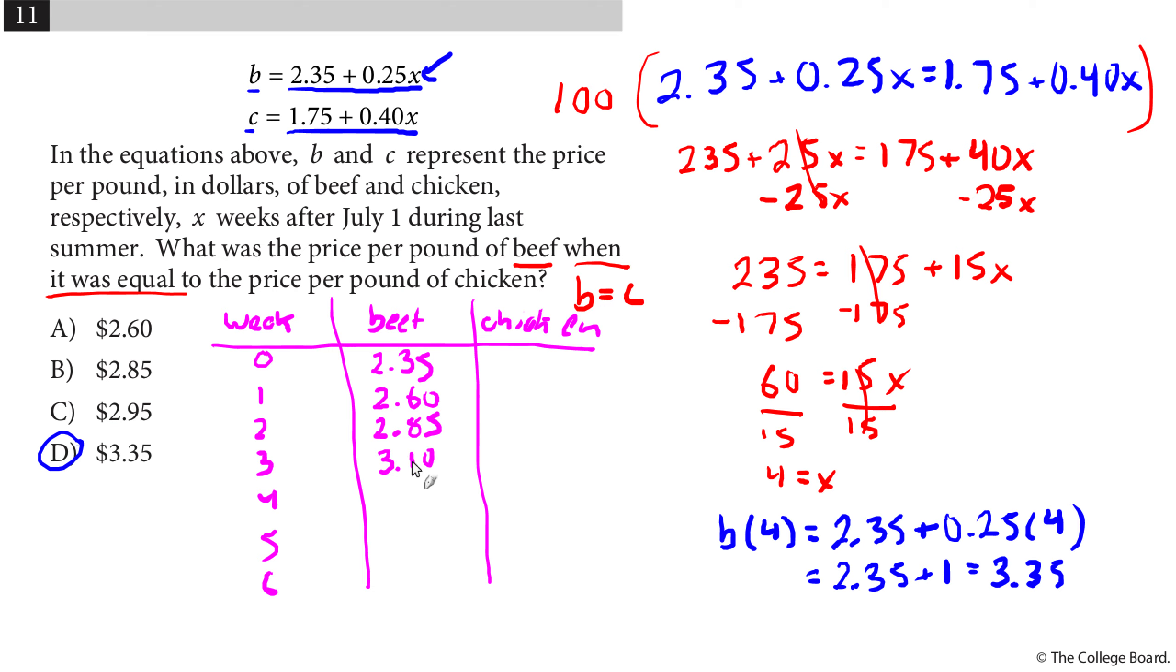So three weeks, that would be 3.10. After four weeks, that'd be 3.35. After five weeks, that would be 3.60. And after six weeks, that'd be 3.85 and so forth. And then I can look and see what happens to chicken. So chicken follows this. It starts off at $1.75, but then we add 40 cents each week. So $1.75 plus 40 cents gives me $2.15. Plus 40 cents gives me $2.55. Plus 40 cents gives me $3.35. You can see through this method that at four weeks, that's when they have the same price.